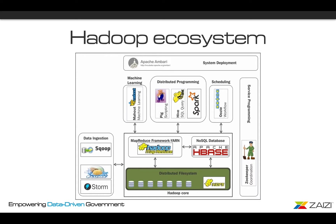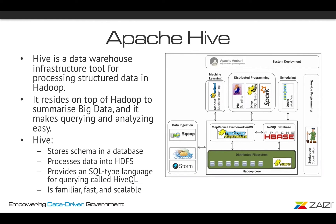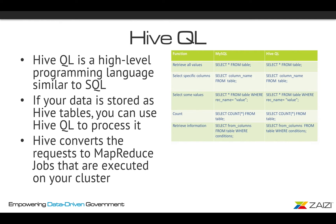So what is Apache Hive? Hive is a data warehouse infrastructure tool for processing structured data in Hadoop. It resides on top of Hadoop to summarize big data and makes querying and analyzing easy. Hive stores schema in a database, processes data into HDFS, and provides a SQL-type language for querying called HiveQL, which is familiar, fast, and scalable.